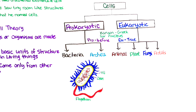A bacterial cell is also quite a lot different compared to other cells. To start with, bacteria are a lot simpler than eukaryotes, and instead of having their DNA tightly wound up in a nucleus, it's found in the cytoplasm.